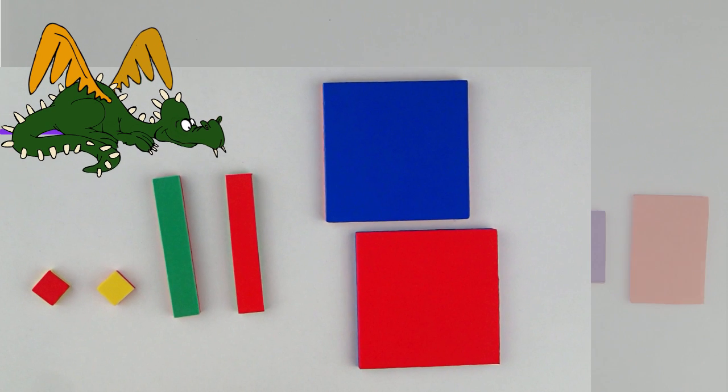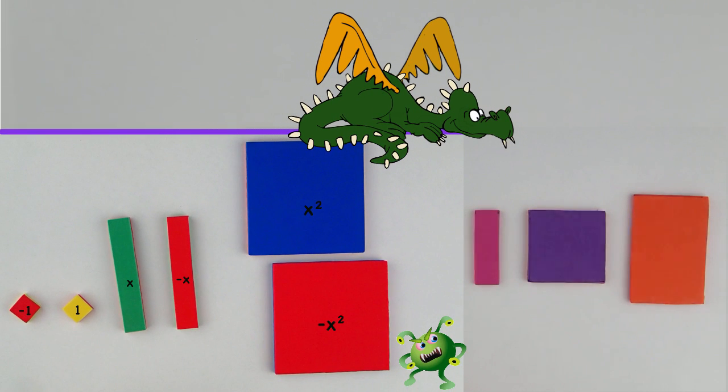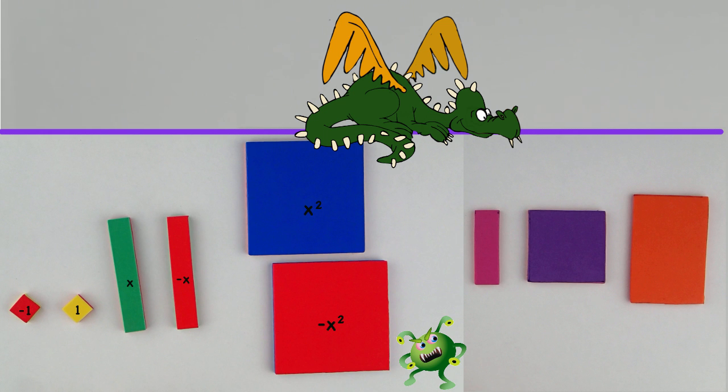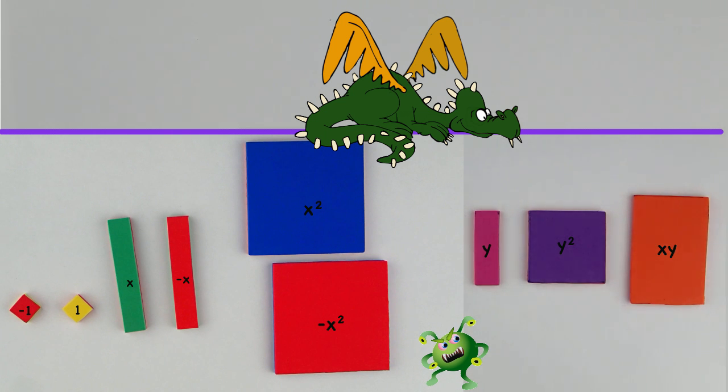As we move on in our study of algebra, we'll sometimes find that more than one variable is used. But that doesn't matter. We can create tiles to represent different variables such as y, y², or even xy. We'll be using the algebra tiles in future lessons to help us visualize what's going on with the problems that we're trying to solve.